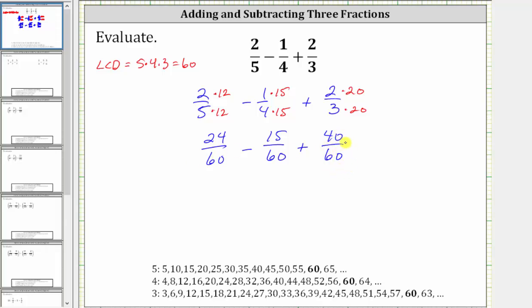Now that we have a common denominator, we can subtract and add from left to right. The denominator is going to remain 60, and the numerator is 24 minus 15 plus 40.